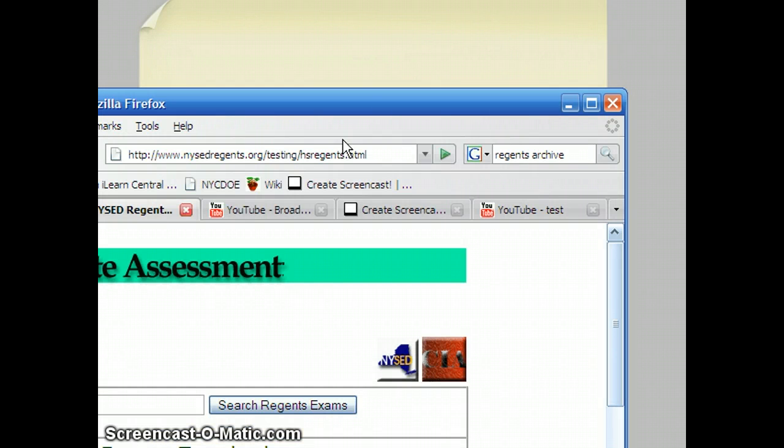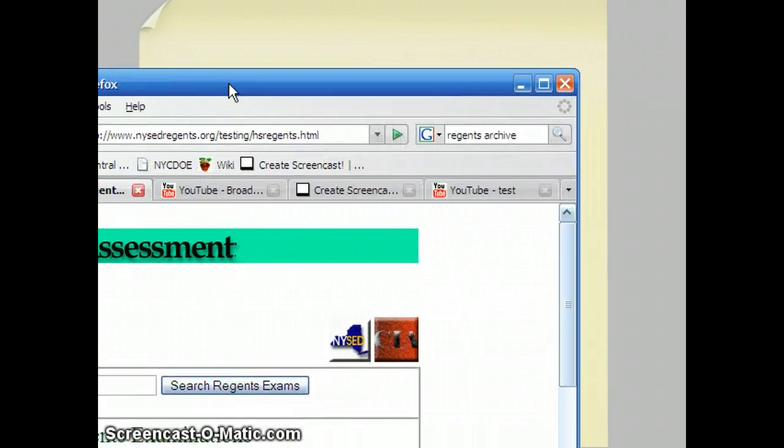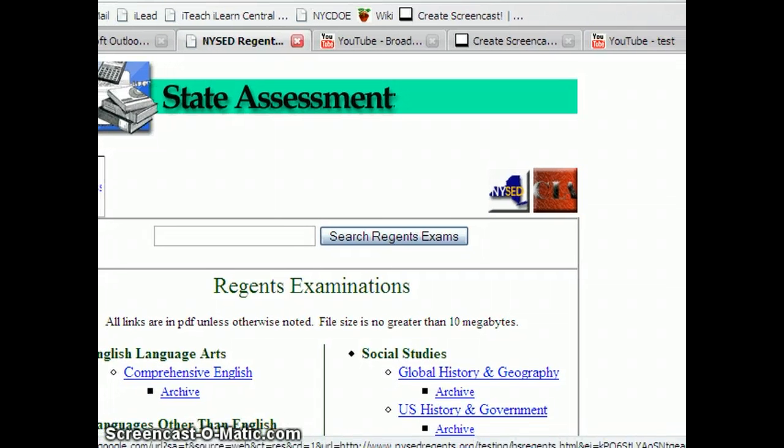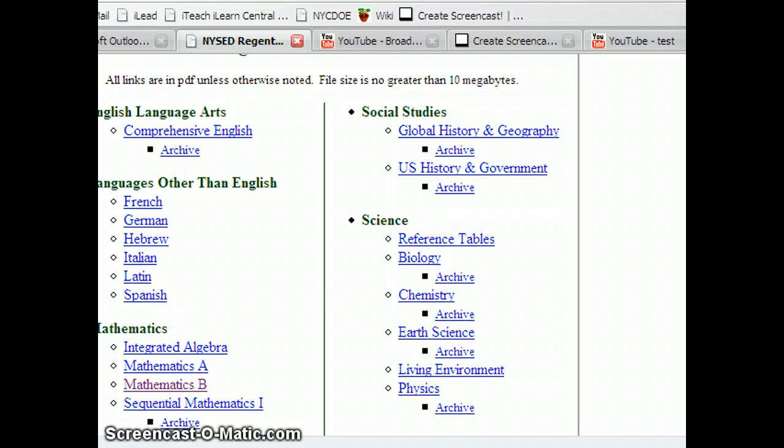Hi, this is Mr. Rubenstein, and I'm going to take you through a series of tutorials to go through the June 2008 Math B Regents exam. Now you should get a copy of that exam handy, and you can get that by going to this website, www.nysedregents.org. You can type Regents Archive into Google, and you can navigate to the Math B section and get that exam.